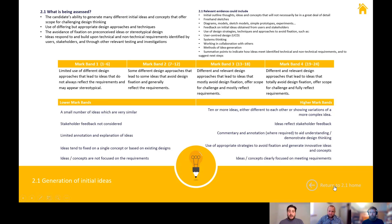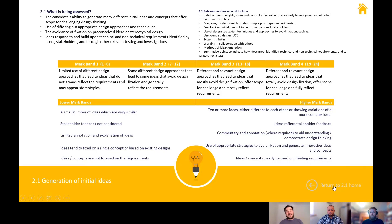If you look at the criteria for the higher mark band, you need 10 or more ideas, each different and showing variations of more complex ideas. Don't confuse that with 10 sketches — I would expect around four sketches per idea: a front view, a top view, a side view, maybe a focused view on a mechanism. Make sure there's lots of annotation to strengthen communication to the viewer. A really important point to pick out again is totally avoiding design fixation.